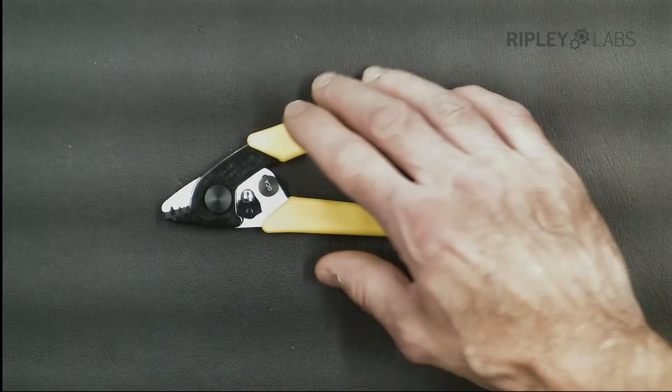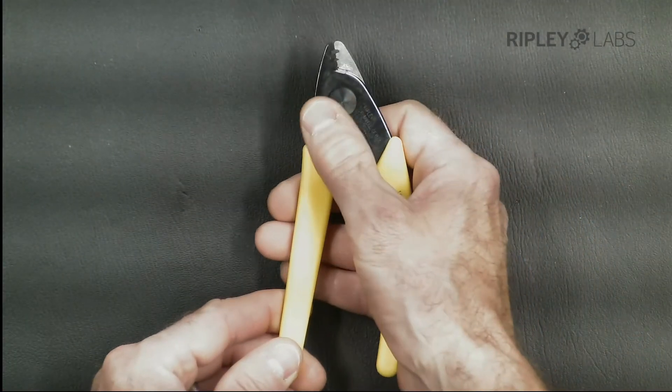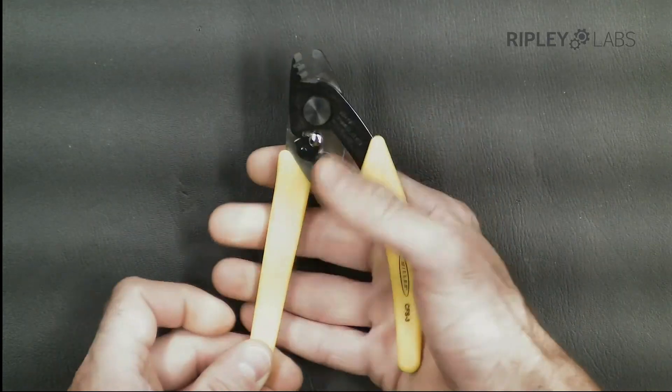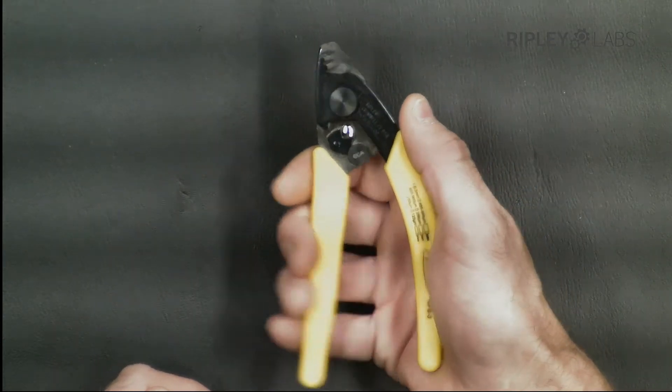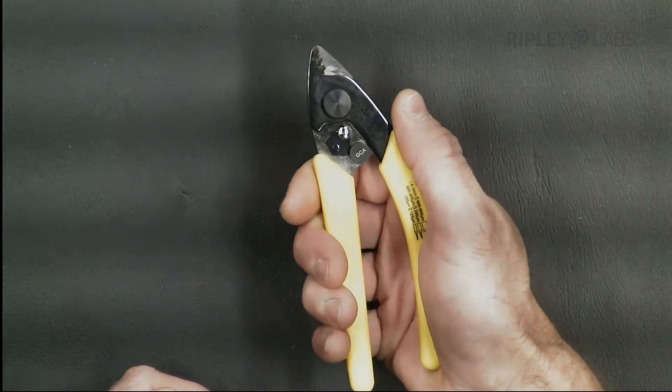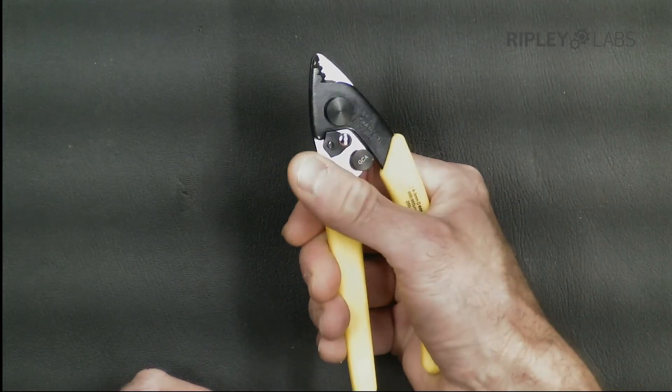We designed the Miller CFS-3 3-hole stripper with an ergonomic shape, soft handle grips, and spring-loaded handles which result in a non-fatiguing action. This gives the installer precise control while stripping fiber.